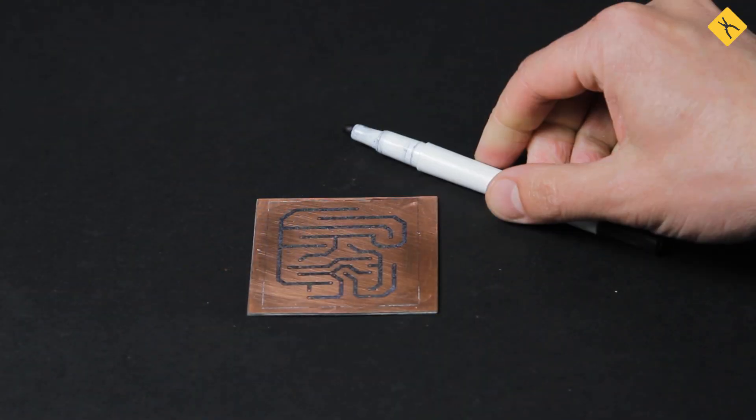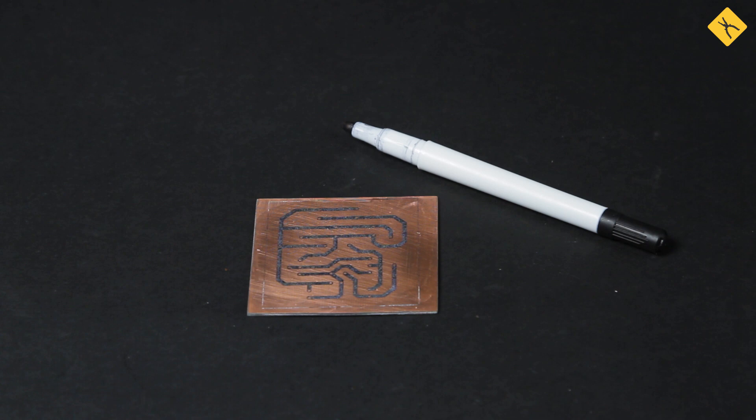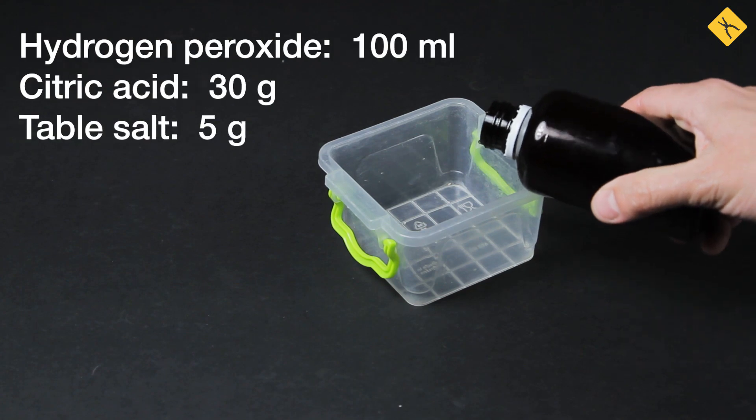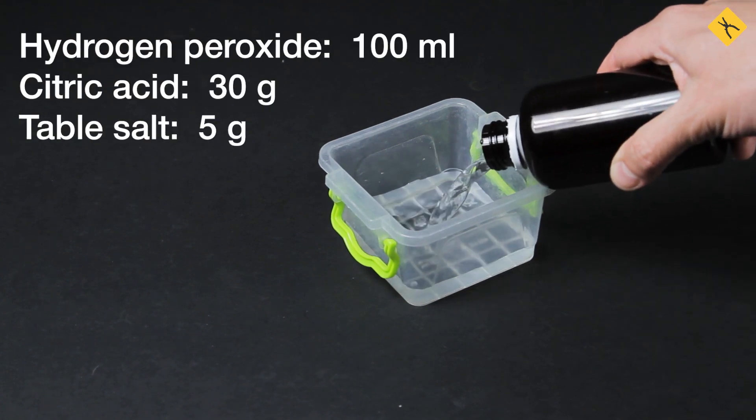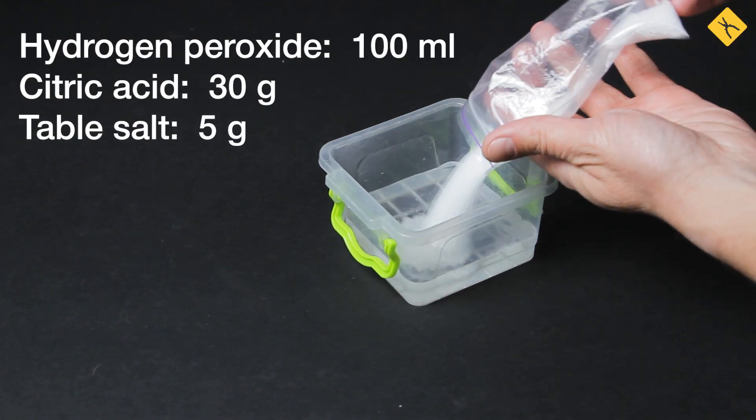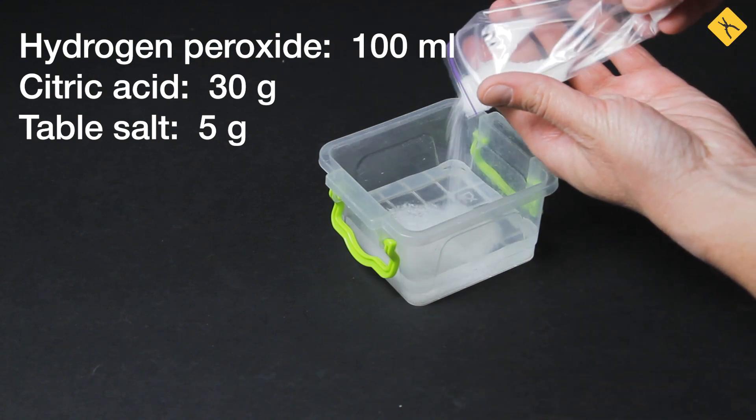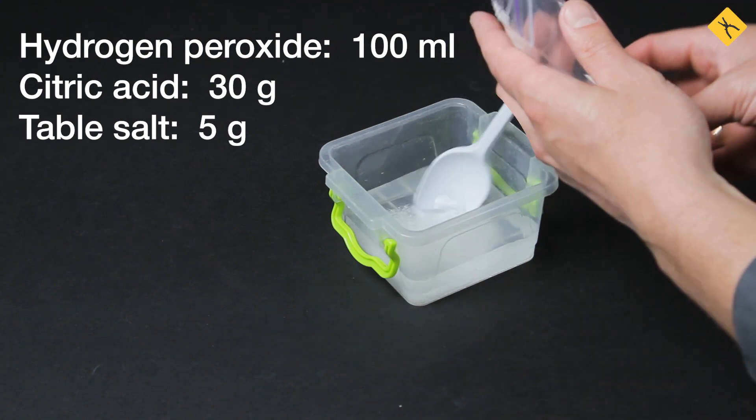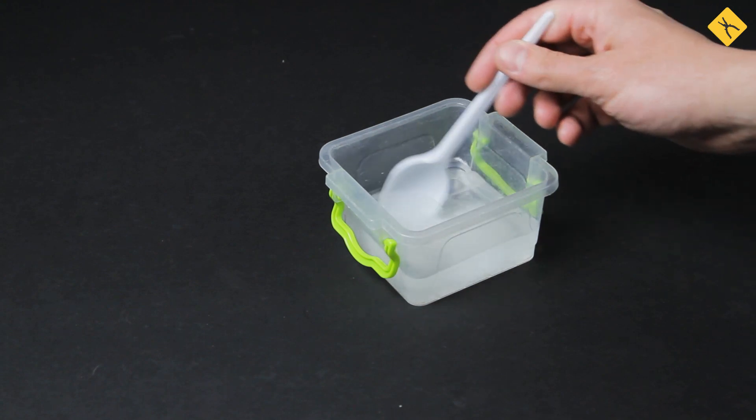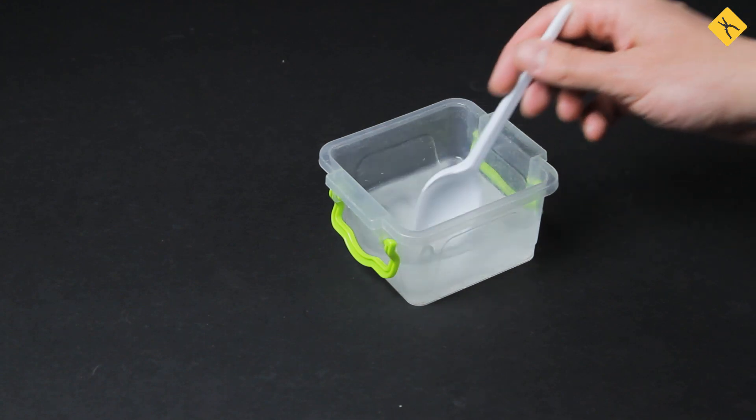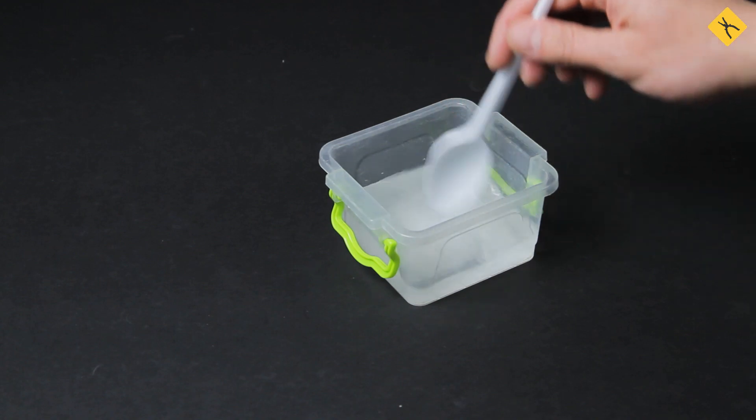If the toner did not stick to some parts of the board, you can use a regular marker to touch up the pattern. Now, let's move on to chemical milling. We're going to use hydrogen peroxide and citric acid in these proportions. This is the safest and the easiest to prepare milling solution. It's also transparent, so you'll be able to observe the entire process.